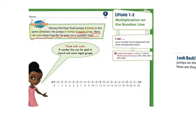Take another closer look at your word problem. Harvey the Hop Toad jumps four times in the same direction. He jumps five inches each jump. How can you show how far he goes on a number line? If you take a look at our number line, always starting at zero, let's jump five inches. There's one jump. Let's jump another five. There's two jumps.